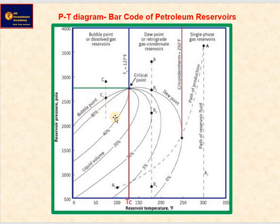Gas cap reservoirs: If the initial reservoir pressure is below the bubble point pressure of the reservoir fluid, the reservoir is termed as a gas cap reservoir in which the gas phase is underlain by the oil phase. There are heavy oil, black oil, light oil and volatile oil reservoirs in nature depending upon API gravity of the oil.